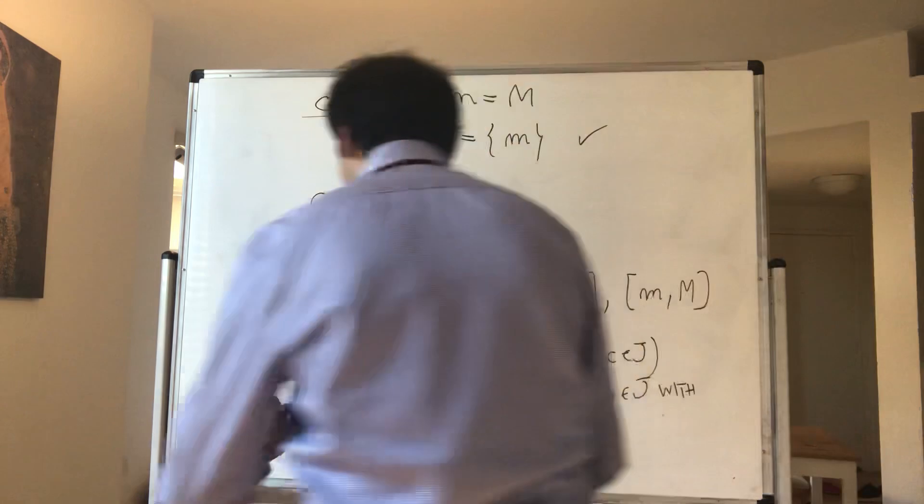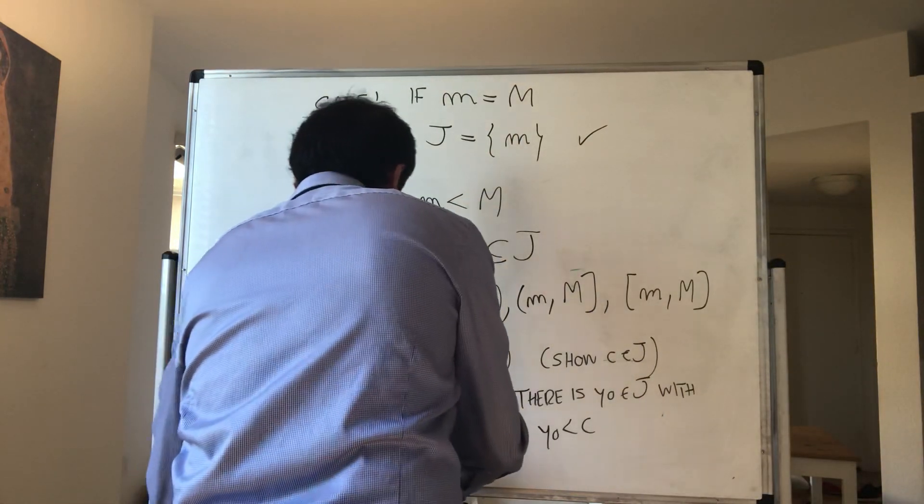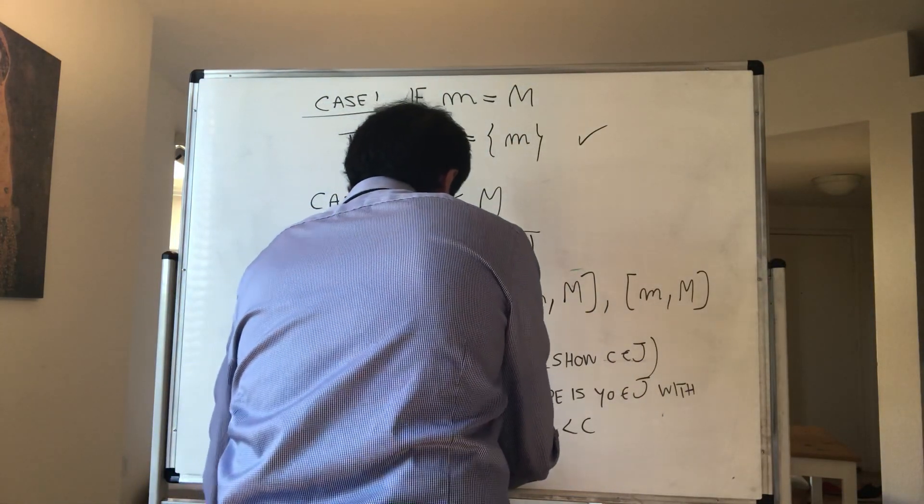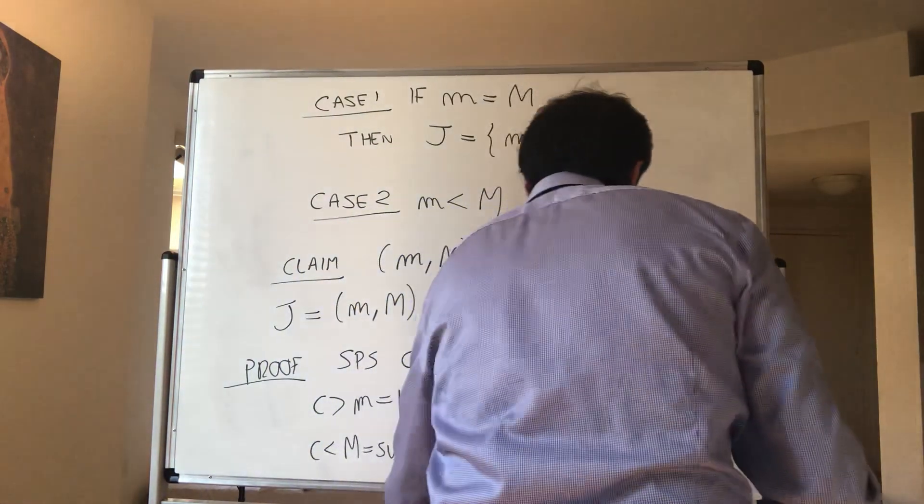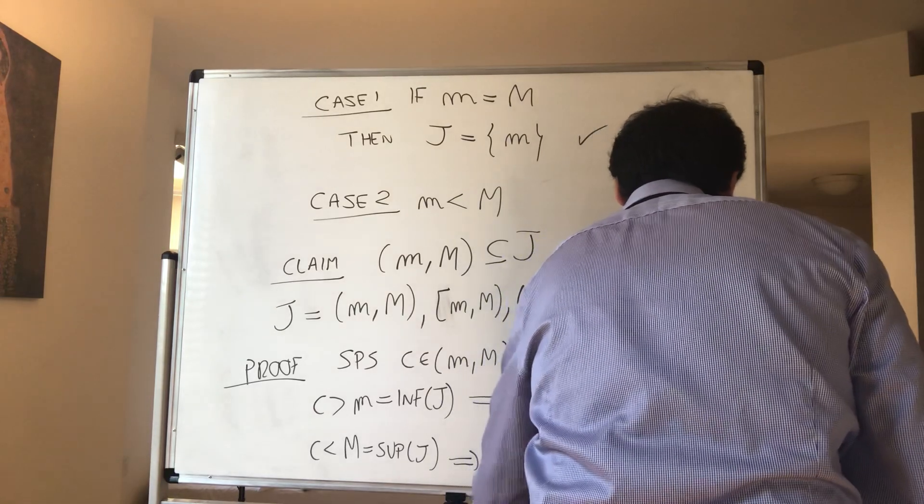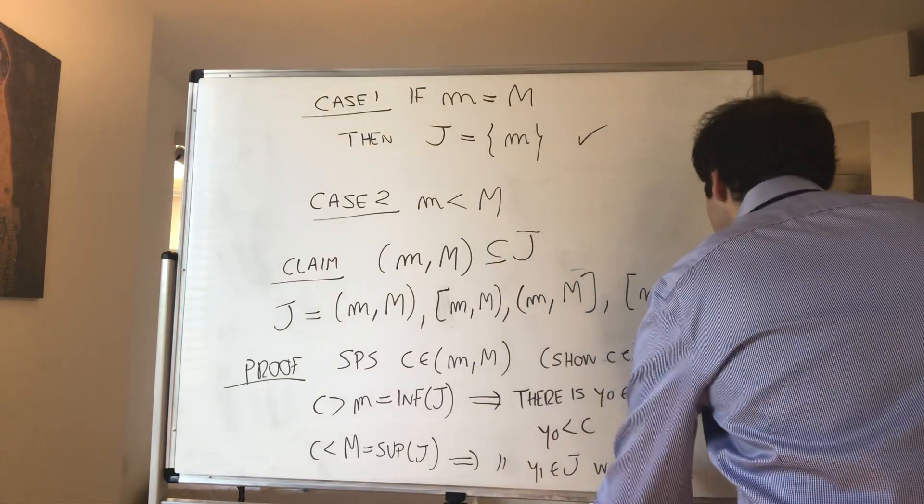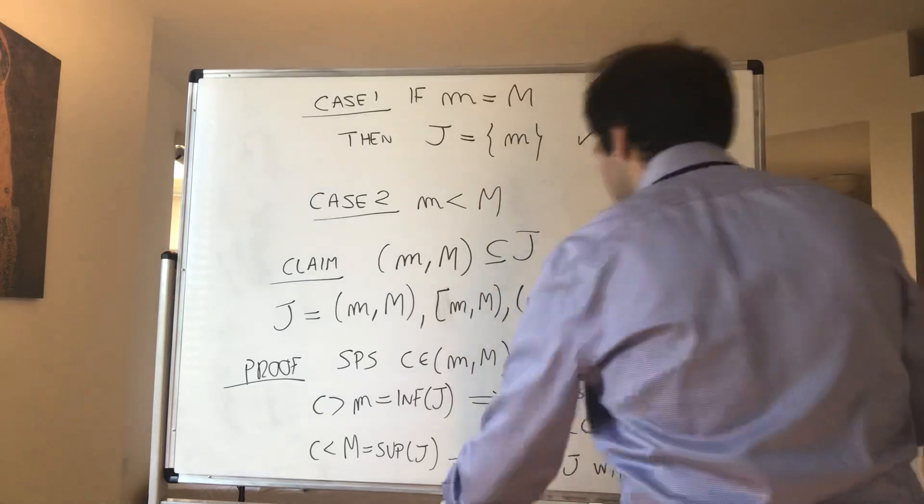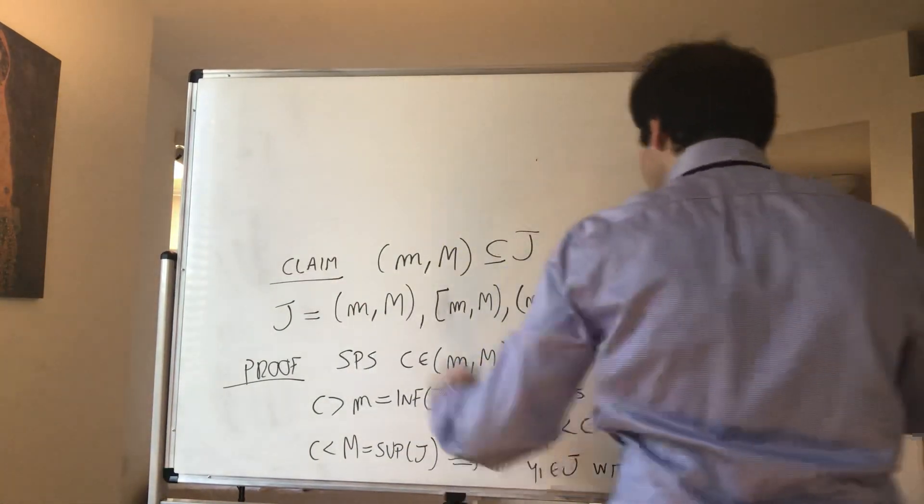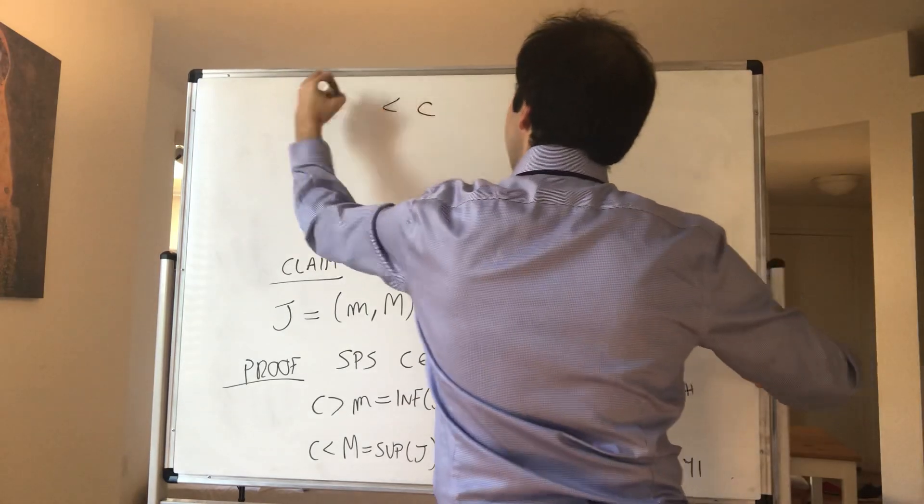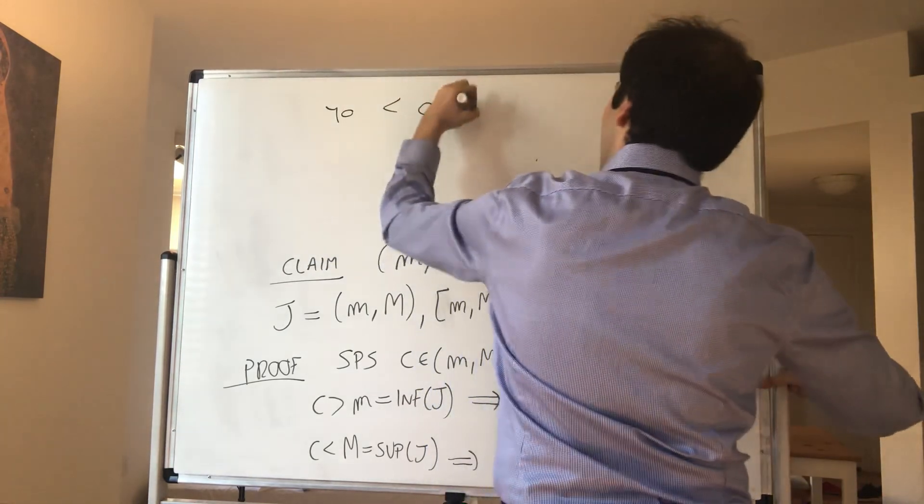So by definition of infimum, you're not the worst student, so there is a student that's worse than you. So there is y₀ in J with y₀ is less than c. And similarly, because c is less than M, which is the supremum of J, we know that there is y₁ in J.